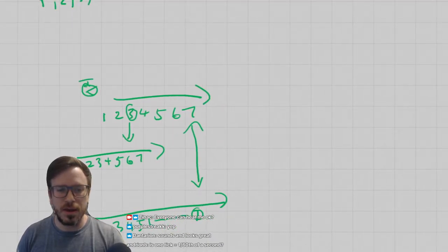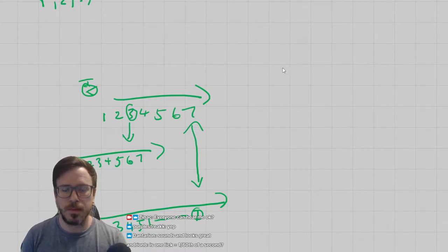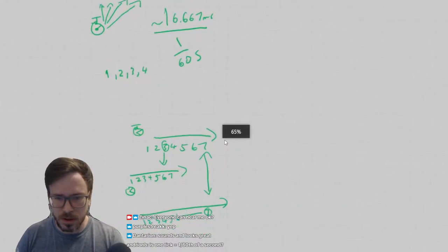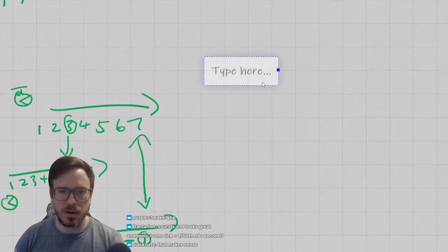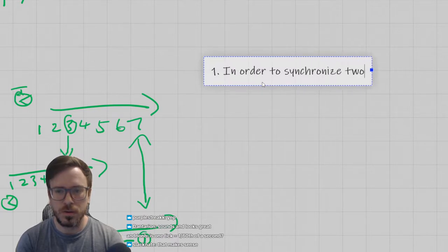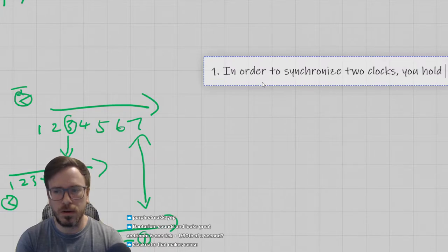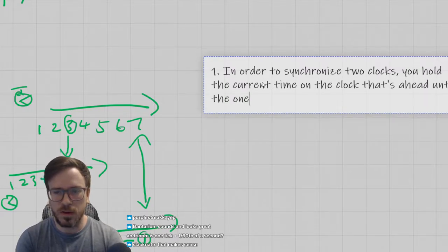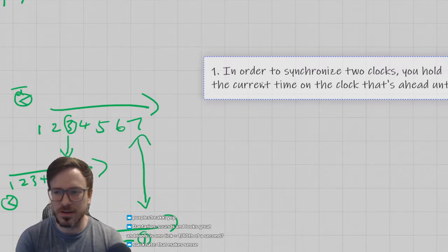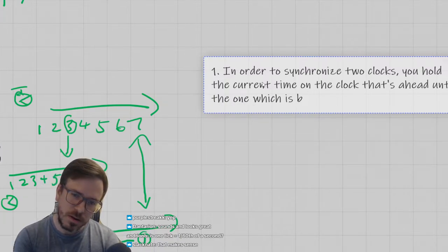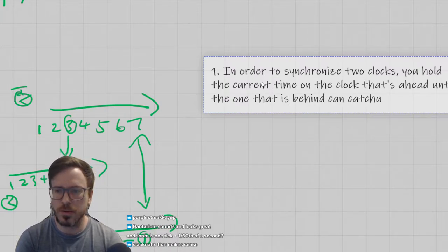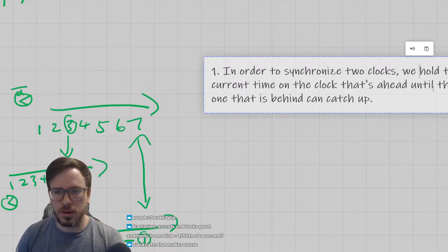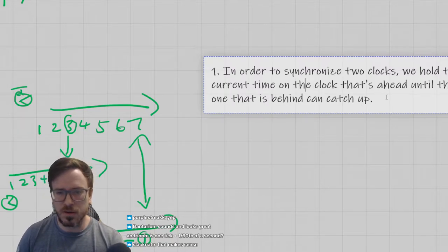This is important for fighting games because we want to reduce the amount of one-sided rollbacks. We need our games to reflect the same input at nearly the same time. The idea is: in order to synchronize two clocks, you hold the current time on the clock that's ahead until the one that is behind can catch up.